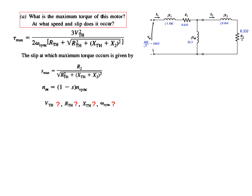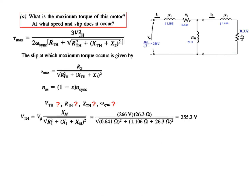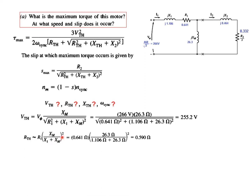Using the V_Thevenin formula, plugging in the phase voltage of 266 volts, XM = 26.3, and all other values using a scientific calculator, we get V_Thevenin = 255.2 volts. Using the R_Thevenin formula and plugging in values, R_Thevenin = 0.590. X_Thevenin equals X1, which is 1.106.